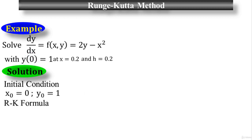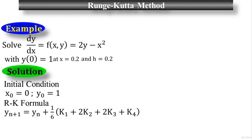The formula of the Runge-Kutta method is: y_(n+1) equals y_n plus (1/6) times (k₁ plus 2k₂ plus 2k₃ plus k₄). This is the formula of the Runge-Kutta method. k₁, k₂, k₃, and k₄ are the four stages of this process.